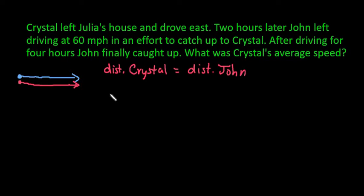So with this, like any other, let's read through the whole problem. Crystal left Julia's house and drove east. Two hours later, John left driving at 60 miles per hour in an effort to catch up to Crystal. After driving for four hours, John finally caught up. What was Crystal's average speed?